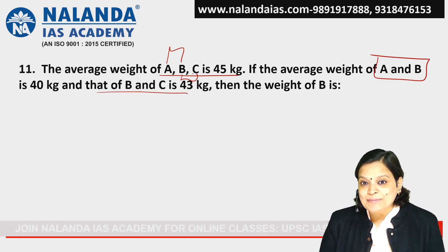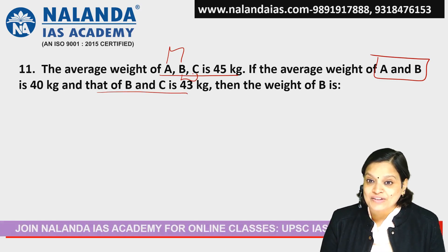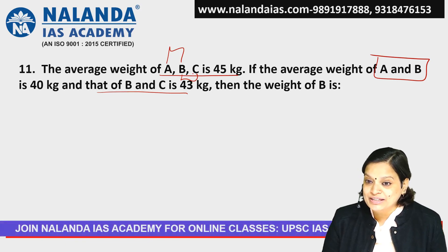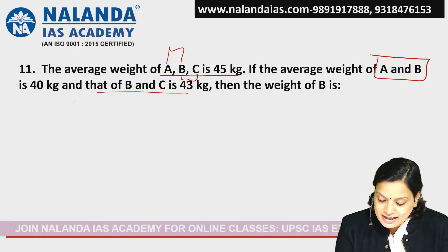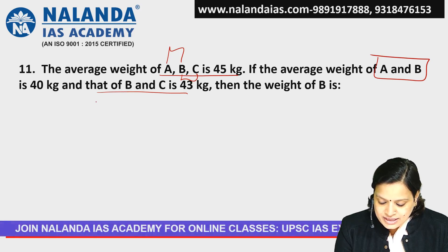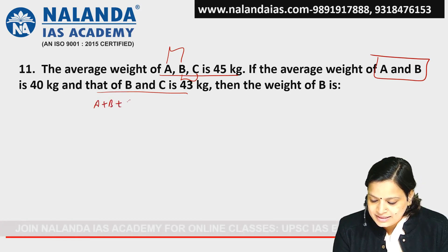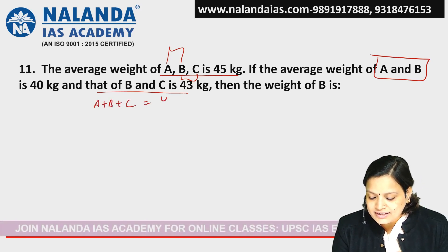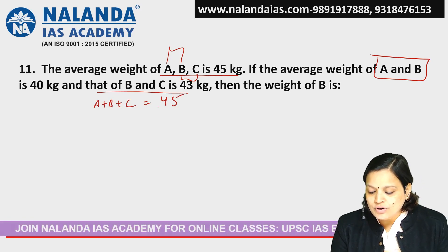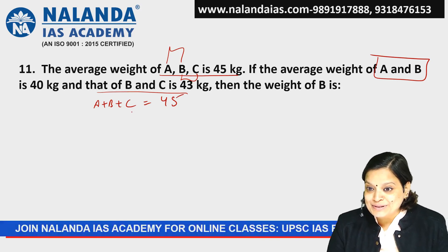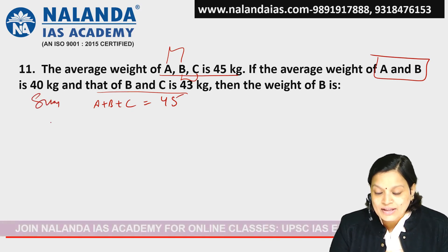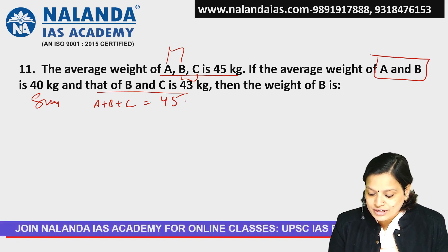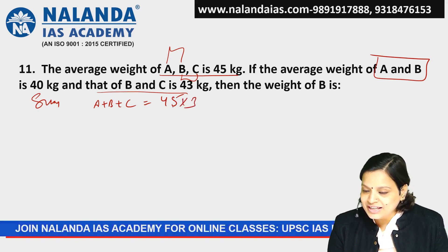We have been asked: what is the weight of B? Let's look at the average of A, B, and C, which is 45. If I write A plus B plus C, I have to find the sum, so A plus B plus C equals 45 into 3.